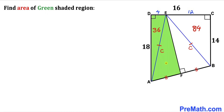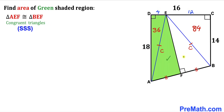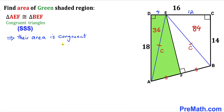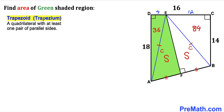Now let's focus on triangles AEF and BEF. These two right triangles are congruent by the Side-Side-Side congruency theorem: the two equal side lengths AE = BE, those sides are congruent, and side EF is common. Therefore their areas are equal. If we call each area S, both triangles have area S.